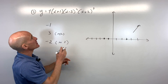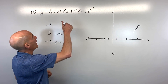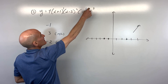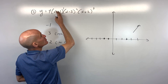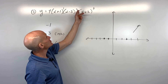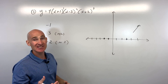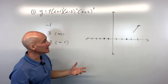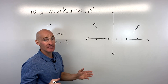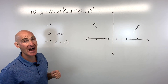For end behavior: the leading coefficient is positive, so the graph goes up to the right. For the degree, look at the exponents: x to the first, x to the second, x to the third. When multiplying, add exponents: 1 plus 2 plus 3 equals 6. This is 6th degree — even. Even degree means both ends behave the same — here both go up. Odd degree would mean opposite ends.